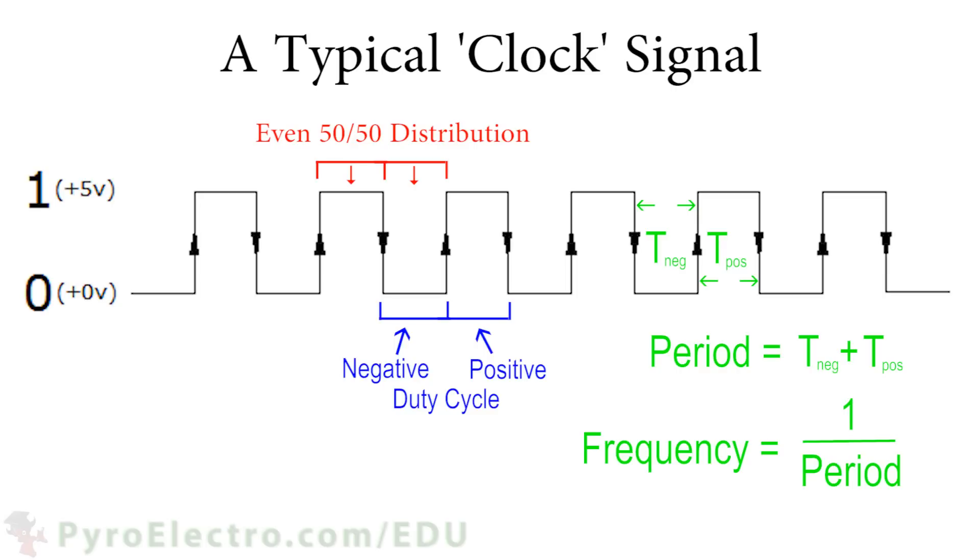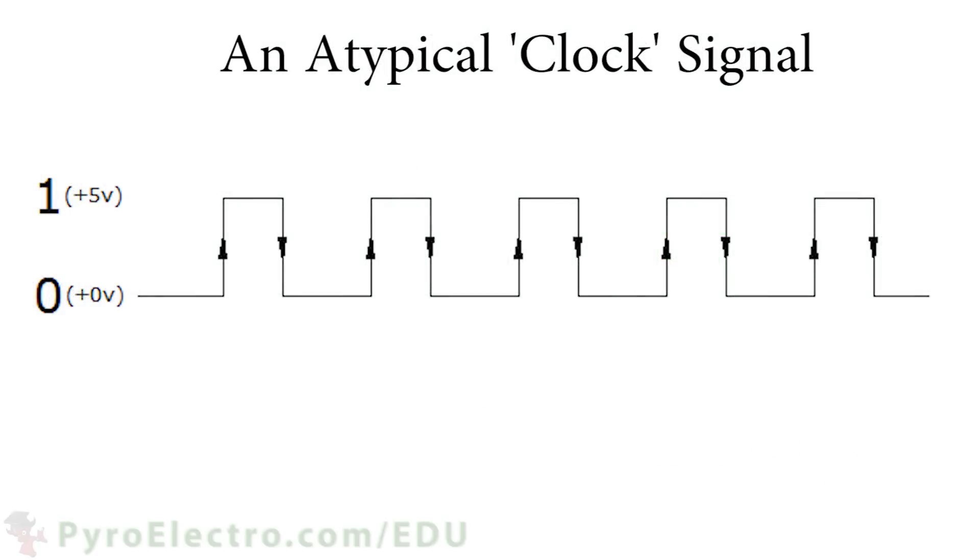To further cement in the idea of duty cycle, if the clock signal looked like this, where the positive duty cycle is 30% and negative duty cycle is 70%, we would refer to the signal as a 30-70 duty cycle, since it's only on 30% of the time.